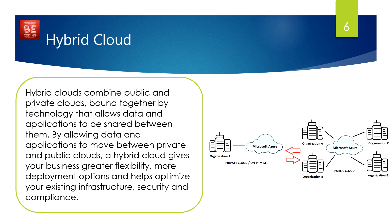A hybrid cloud is a combination of public and private cloud, bound together by technology that allows data to be shared between them. By allowing data and applications to move between private and public clouds, you can get the benefit of an on-premises environment as well as public cloud infrastructure. Restricted or private data is stored on the company's own data center — the on-premises environment — while non-restricted data can be shared with third parties via the public cloud.